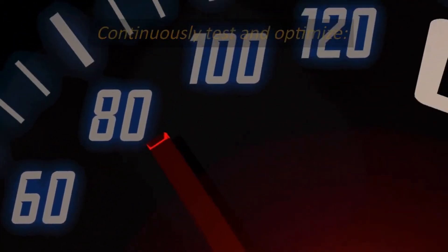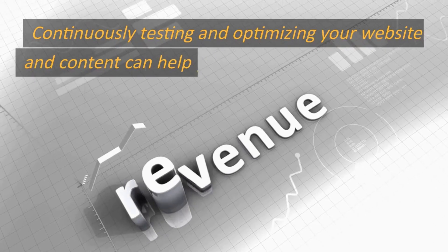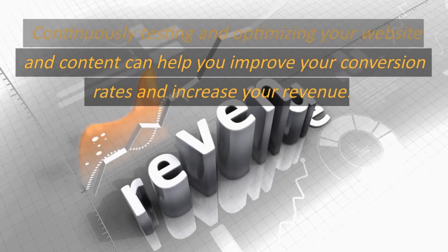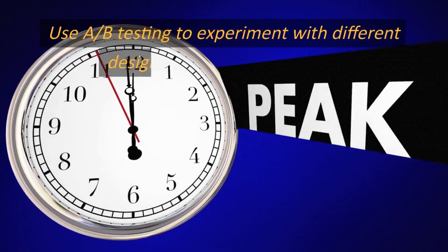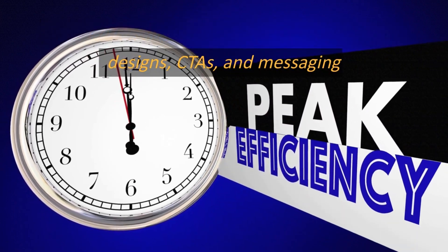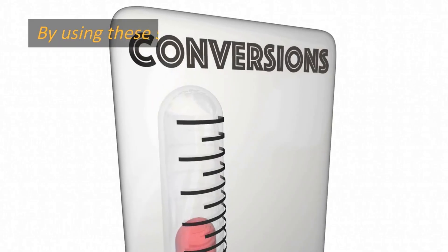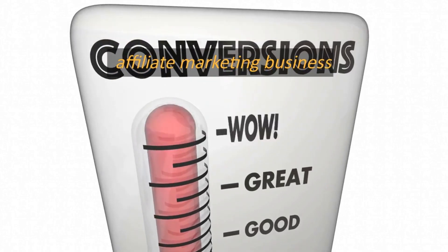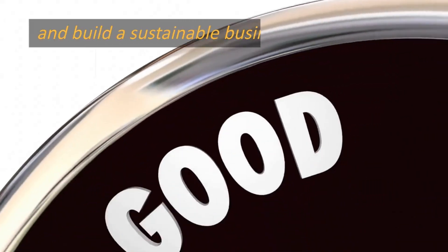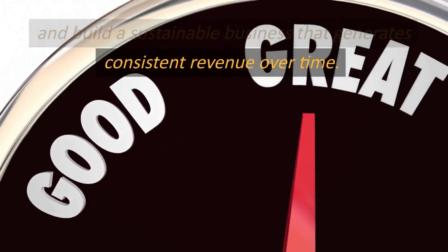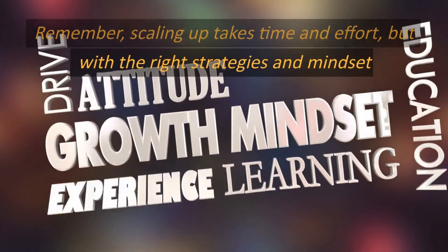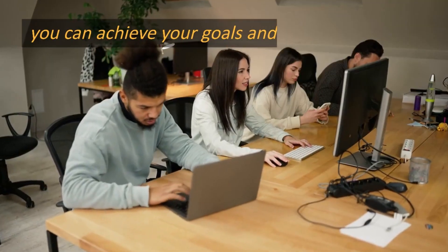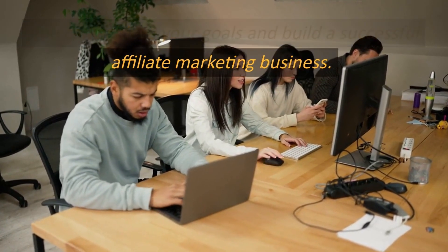Continuously test and optimize. Continuously testing and optimizing your website and content can help you improve your conversion rates and increase your revenue. Use A/B testing to experiment with different designs, CTAs, and messaging, and track your results to see what's working and what's not. By using these strategies, you can scale up your affiliate marketing business and build a sustainable business that generates consistent revenue over time. Remember, scaling up takes time and effort, but with the right strategies and mindset, you can achieve your goals and build a successful affiliate marketing business.